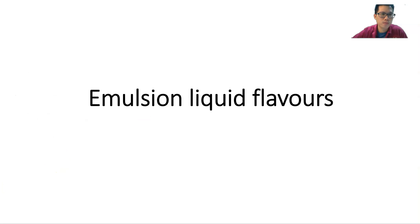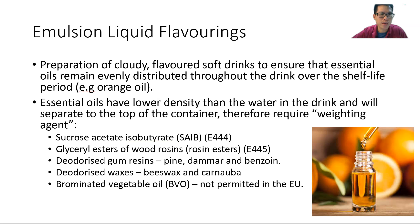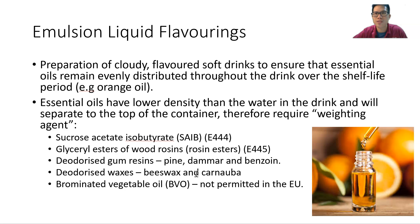The next liquid flavor form is emulsion-based. For example, orange oil — an essential oil — has a slightly lower density, which can lead to separation. Therefore, orange oil is best emulsified before delivery. You can use weighting agents such as sucrose acetate isobutyrate, glycerol esters of wood resin, deodorized gum rosin, deodorized waxes, or brominated vegetable oils to create an essential oil emulsion for delivery into your food product.